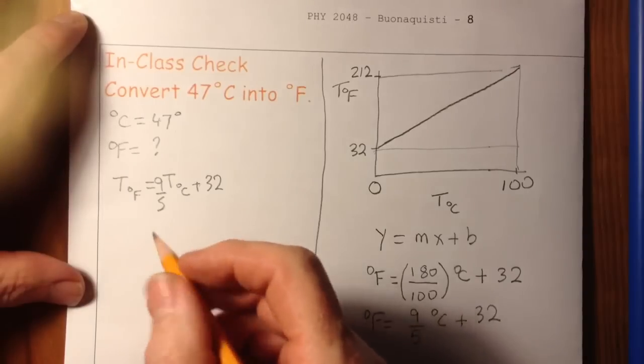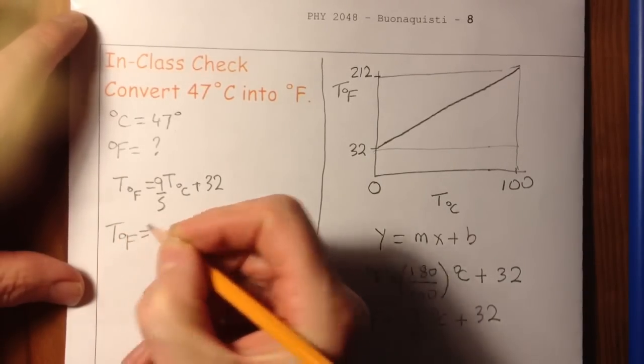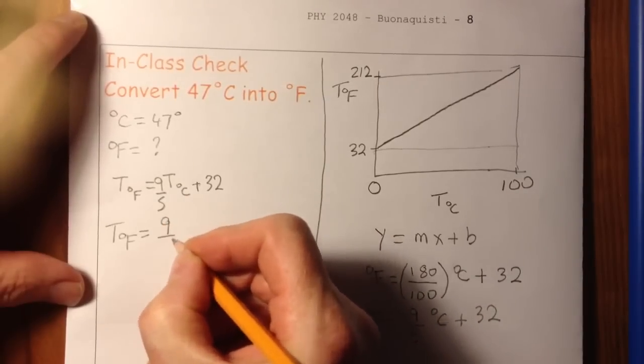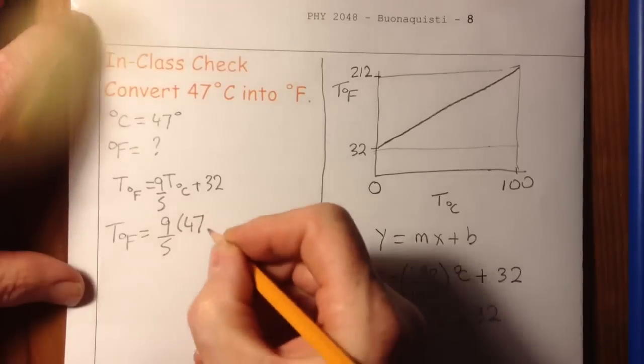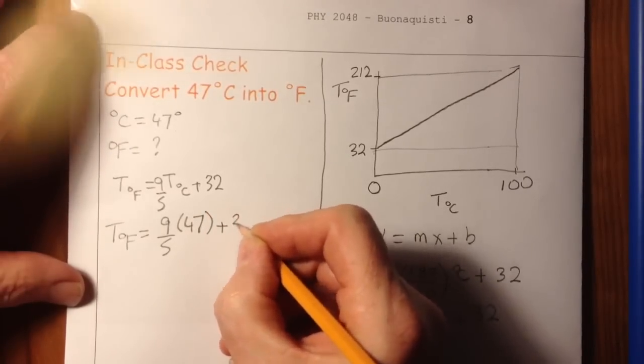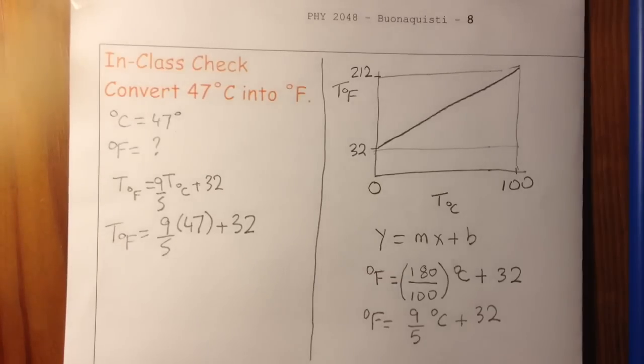But having got this equation, I can say my temperature in degrees F is equal to 9 over 5 times 47 plus 32. And I get my calculator.